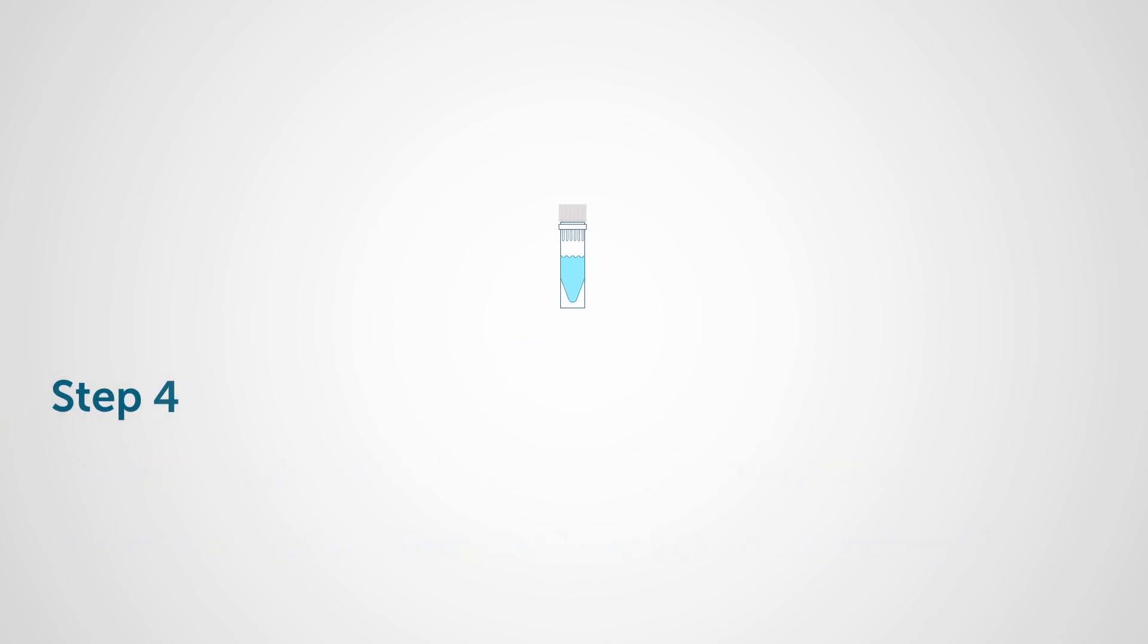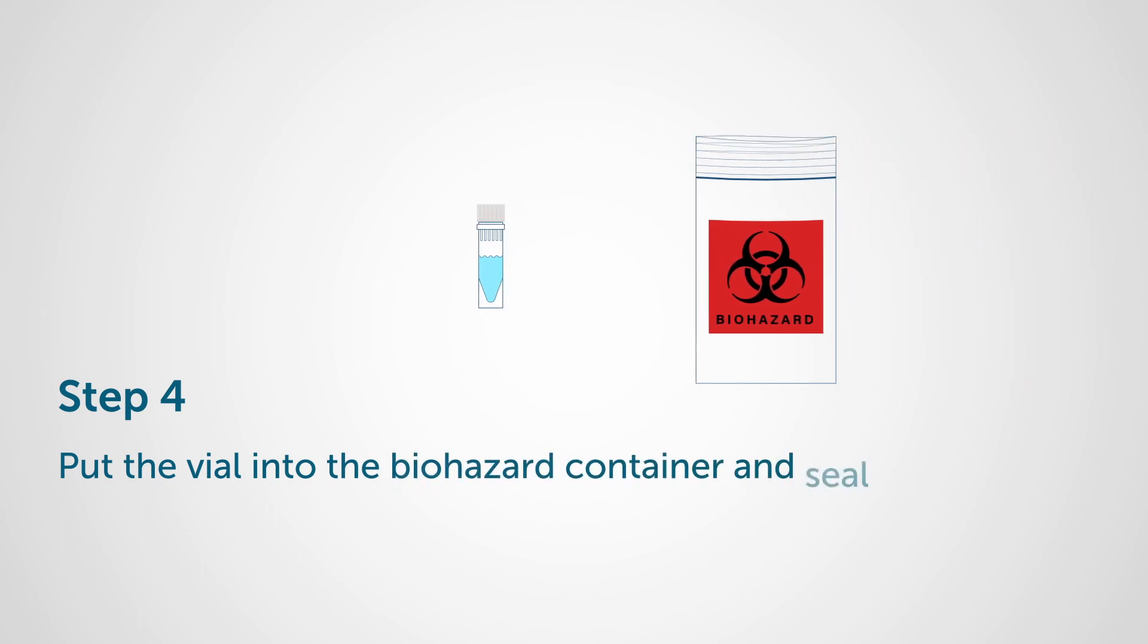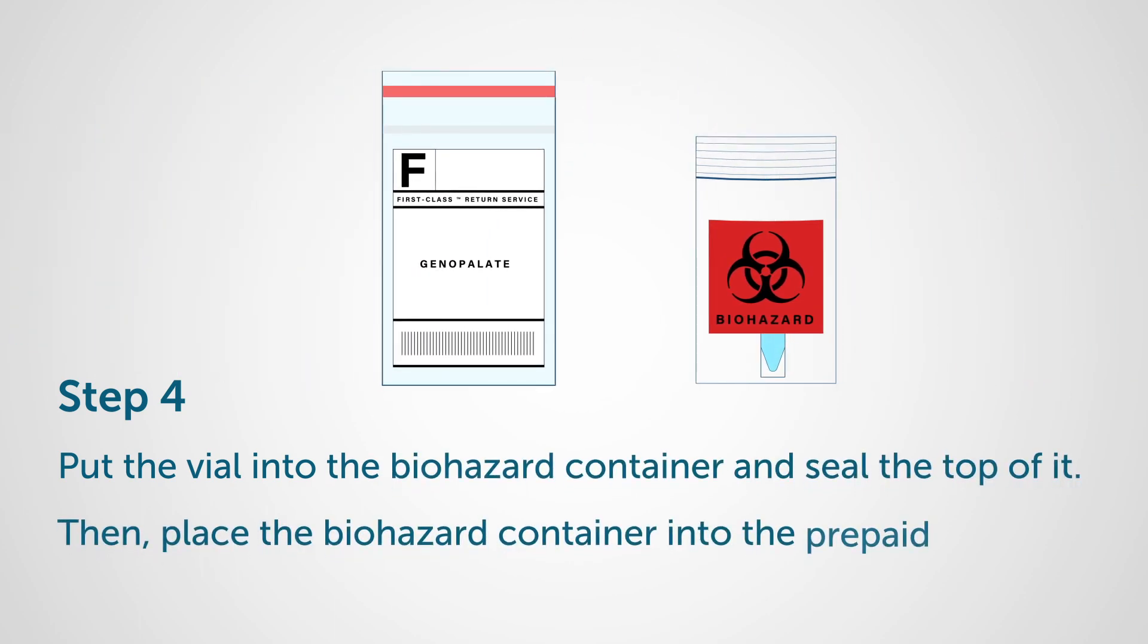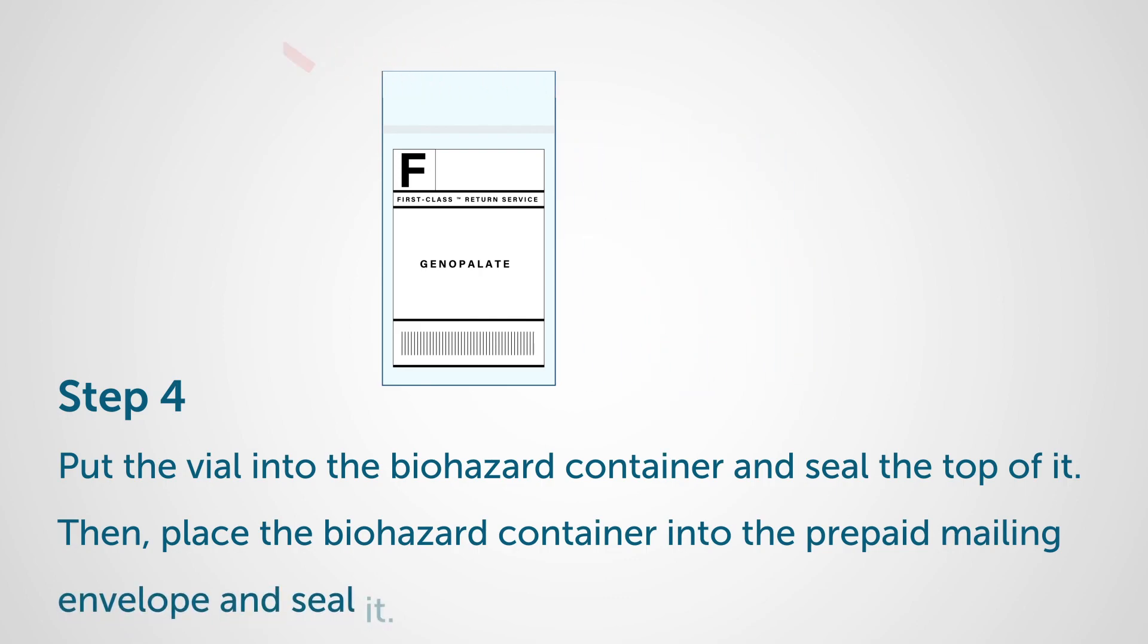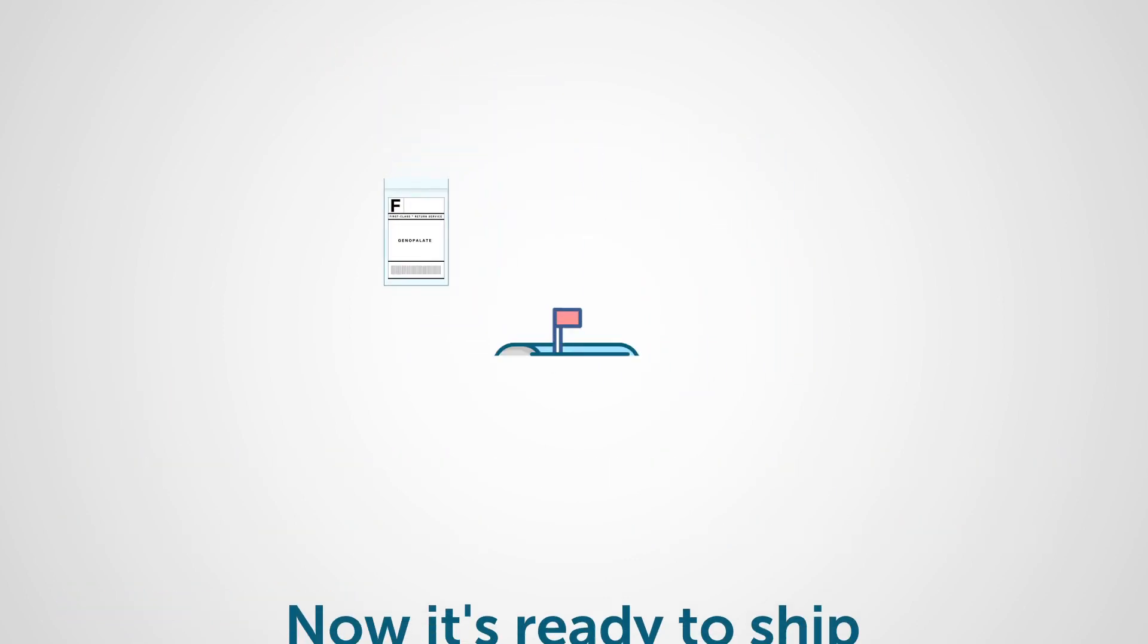Step 4: Put the vial into the biohazard container and seal the top of it. Then place the biohazard container into the prepaid mailing envelope and seal it. Now it's ready to ship.